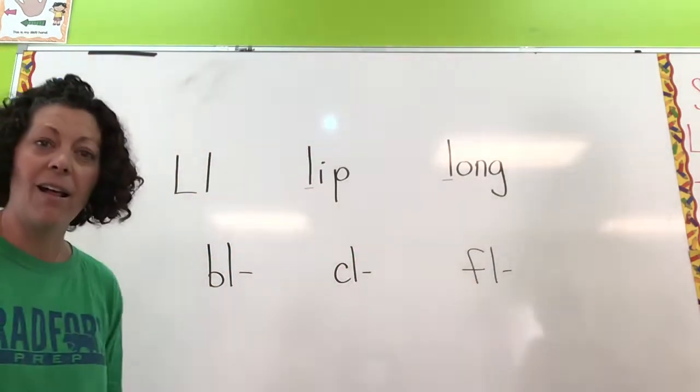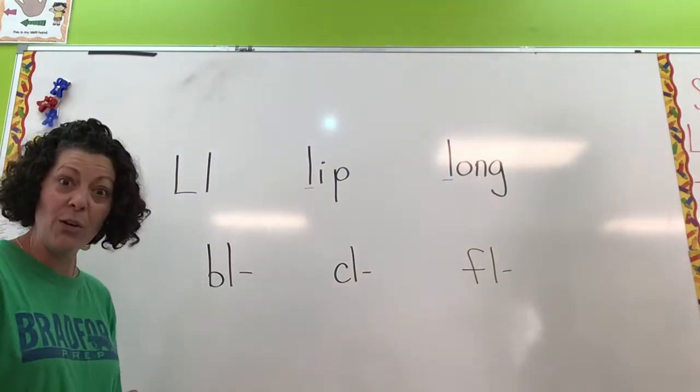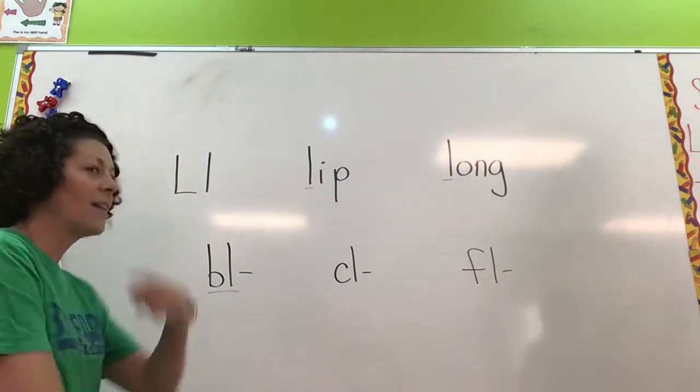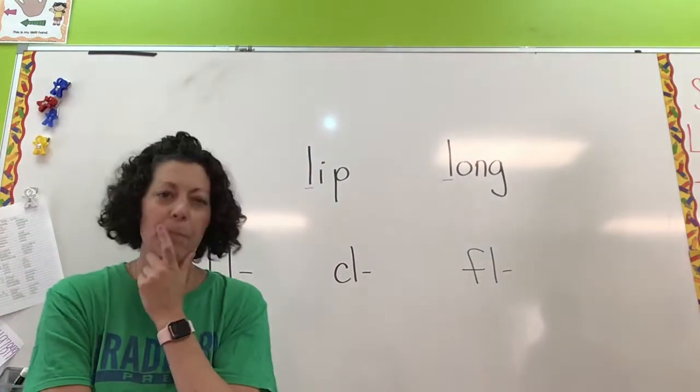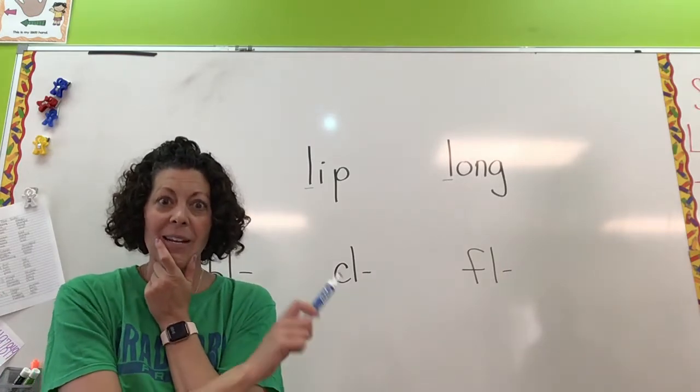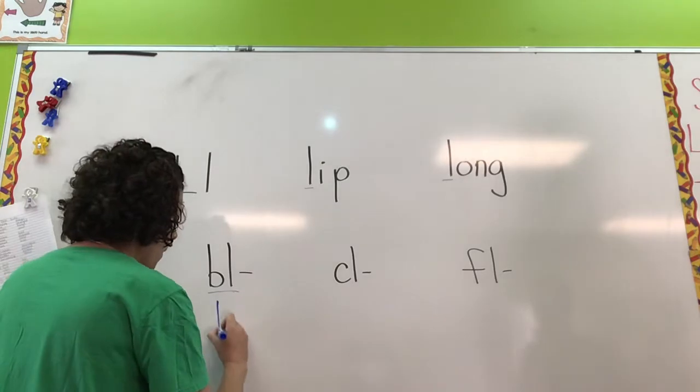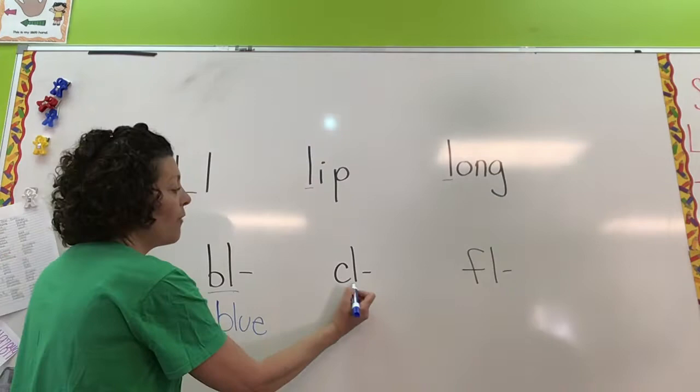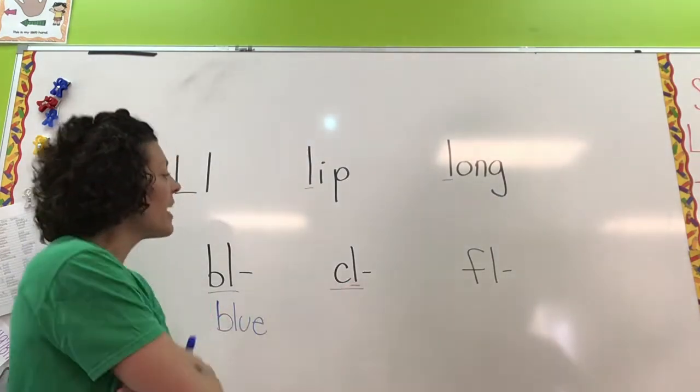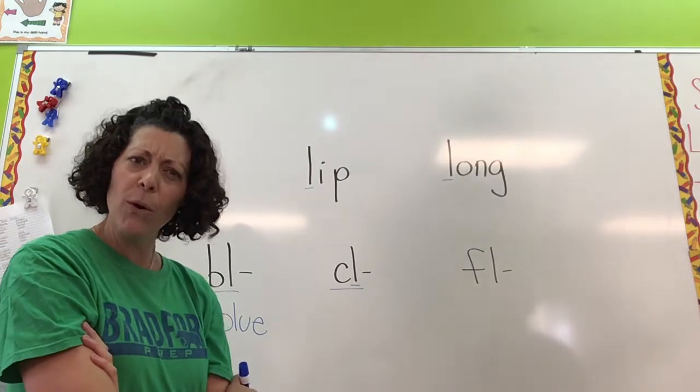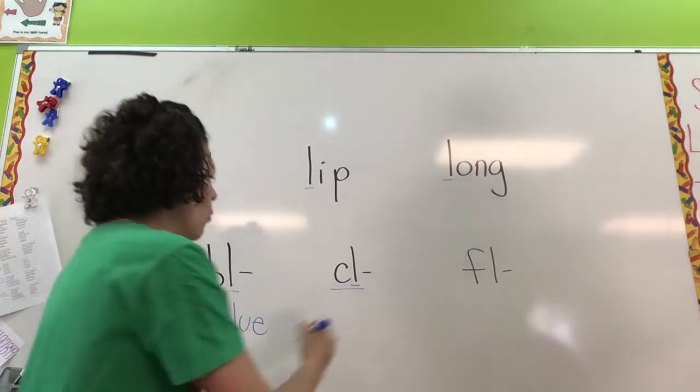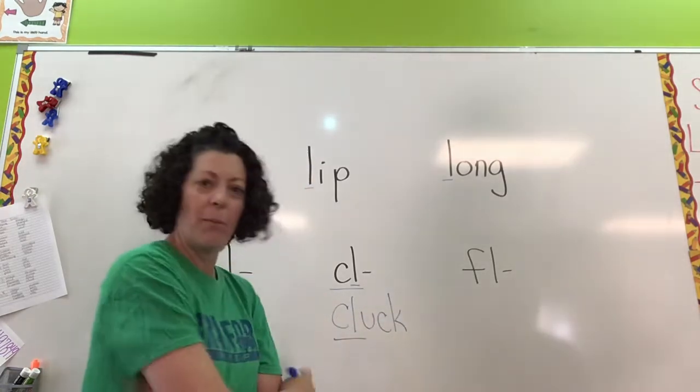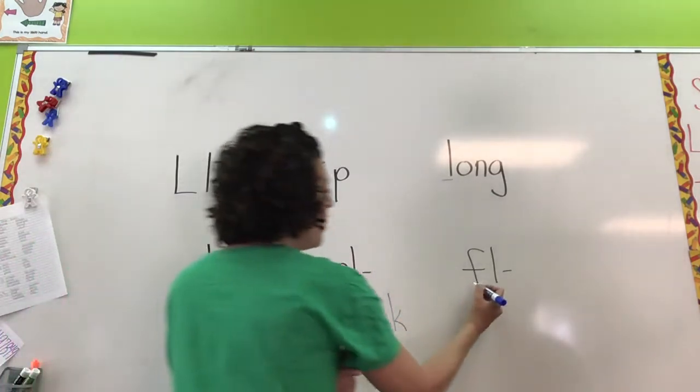We'll find our L at the beginning of a cluster too, which means we have two sounds together. B, L, bl. Let's think of a word that says B, L at the beginning. Maybe it's a color word. How about blue? Blue. Sometimes we'll find our L with a C. Cluck. Cluck. Can you think of a word? Cluck. Cluck. What about cluck? That was for our friend Jacob who takes care of those baby chicks.